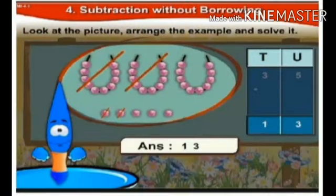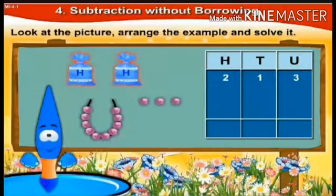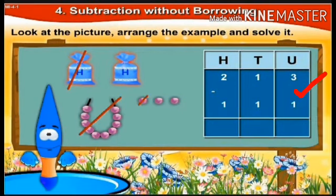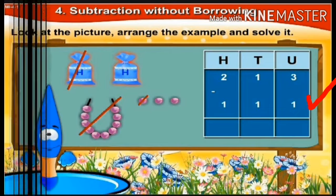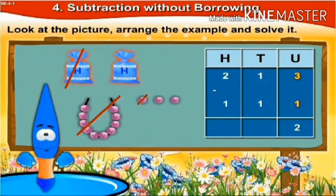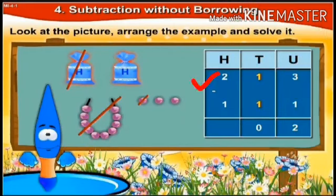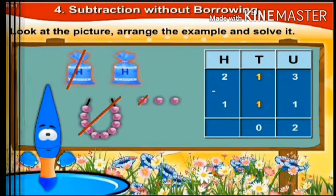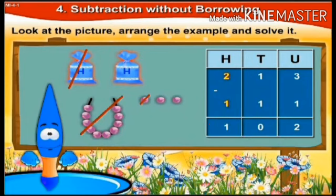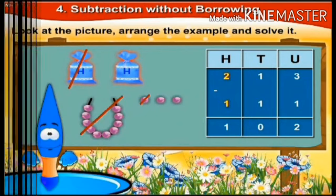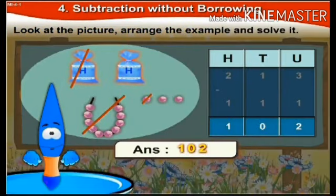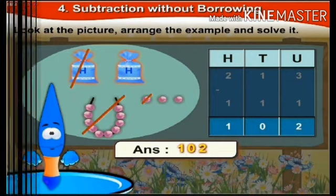Let's move on to another example. Here we have two hundreds in the hundreds column, one tens in the tens column, and three units in the units column. One hundred, one hundred, one tens, and one unit is cancelled. Starting from the units place: three units minus one unit is two units; one tens minus one tens is zero tens; two hundreds minus one hundred is one hundred. So the answer is one hundred, zero tens, and two units — that is one hundred and two beads.